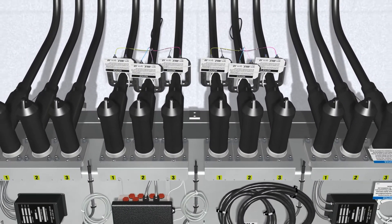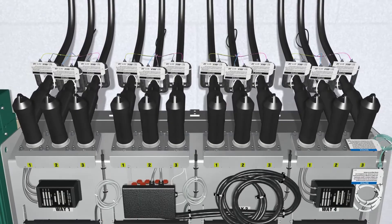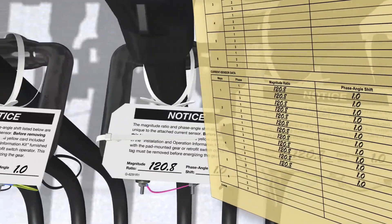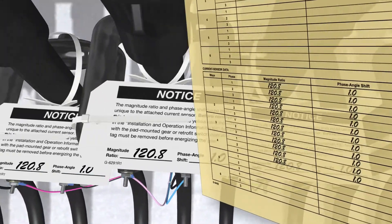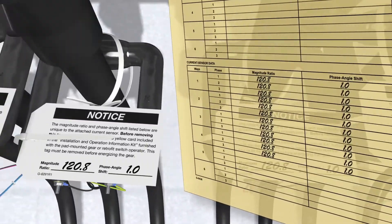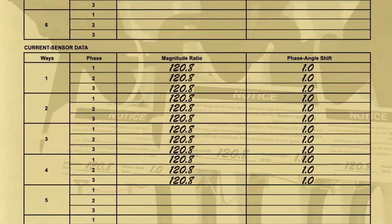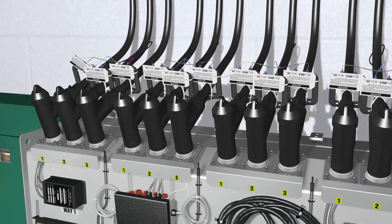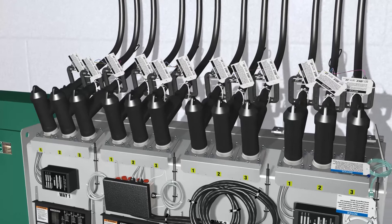Install the set's two other current sensors. Then cross-check the magnitude ratio and phase angle shift of each current sensor with the information recorded on the yellow card. Once complete, remove and discard the attached tags.